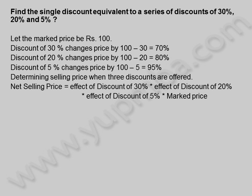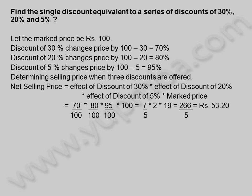Net selling price is equal to effective discount of 30% into effective discount of 20% into effective discount of 5% into marked price. Is equal to 70/100 into 80/100 into 95/100 into 100, is equal to 7/5 into 2 into 19, is equal to 266/5, is equal to 53.20 rupees.